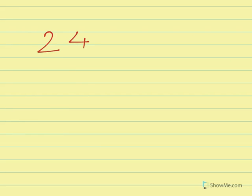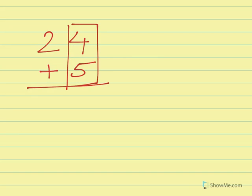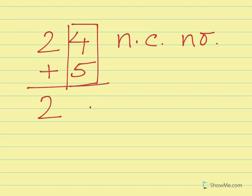Let us take another example: 24 plus 5. We can see that 4 plus 5 is a non-carrying number, so the 2 in the tens position will remain 2. And 5 plus 4 is 9, so our final answer is 29.